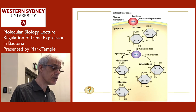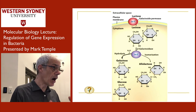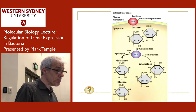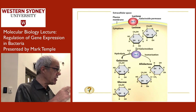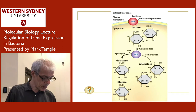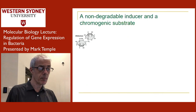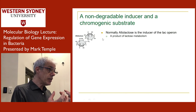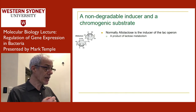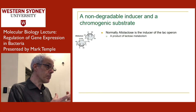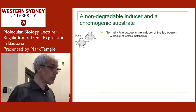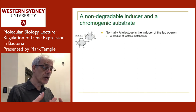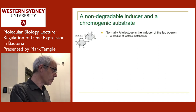To study gene regulation in the 1960s, you need to be able to turn something on or off in a controlled way. While allolactose turns the system on, as lactose gets broken down, allolactose becomes more scarce because it's a product of lactose. So it's hard to study something when the inducer is being degraded by the cell — they needed a stable inducer.